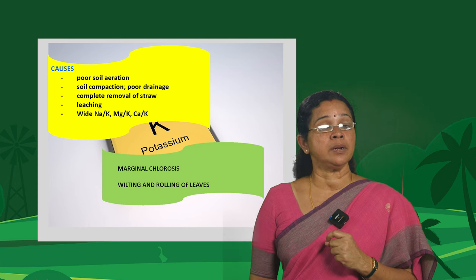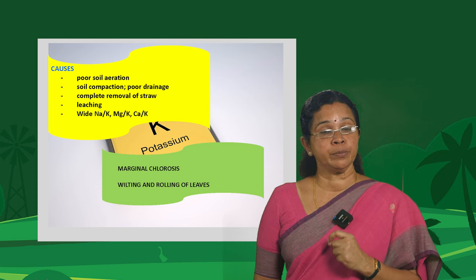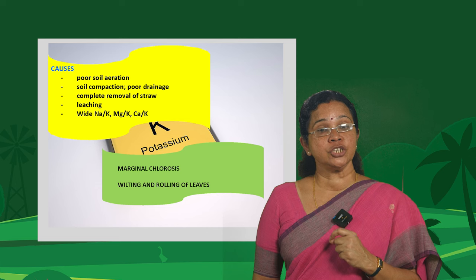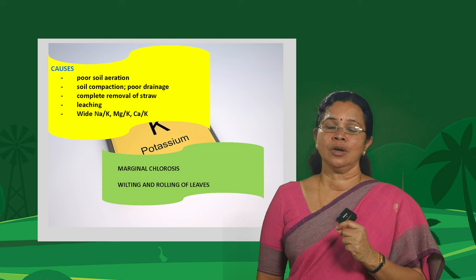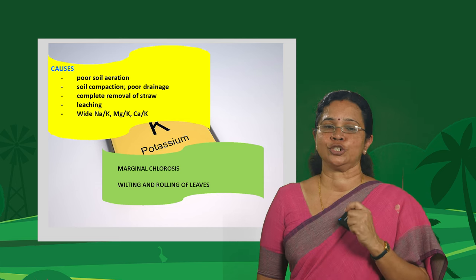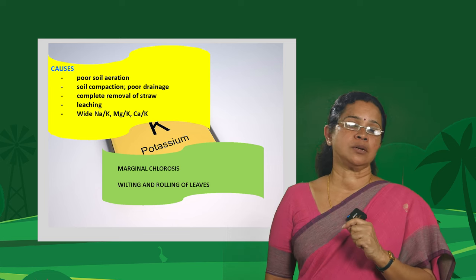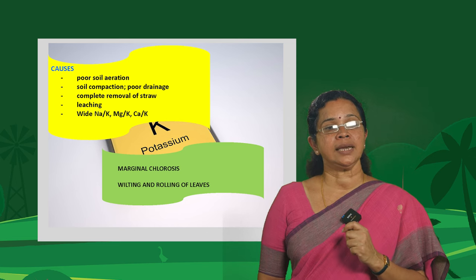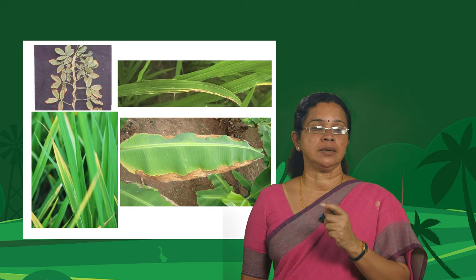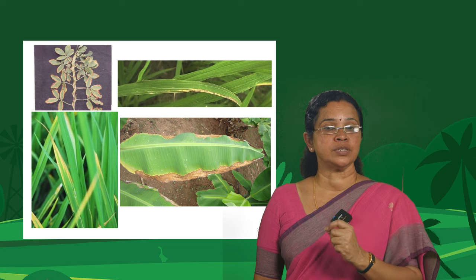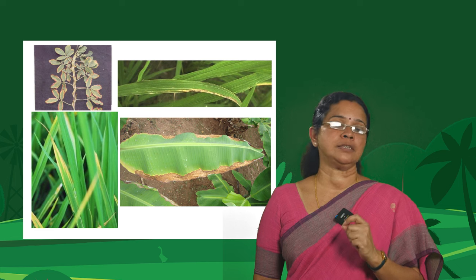Unfavorable ratios such as sodium-to-potassium, magnesium-to-potassium, and calcium-to-potassium — these nutrient interactions between potassium and sodium, magnesium and calcium — can lead to deficiency. The symptom here is marginal chlorosis, followed by wilting and rolling of the leaves. You can see very clearly chlorosis along the margins, and finally that area gets dried up. This marginal chlorosis is a very typical symptom of potassium deficiency.